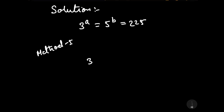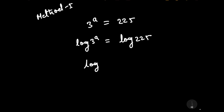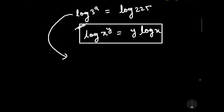It is given that 3 to the power A is equal to 225. Taking log on both sides: log of 3 to the power A is equal to log 225. Using the property that log x to the power y can be written as y log x, we get A log 3 is equal to log 225.